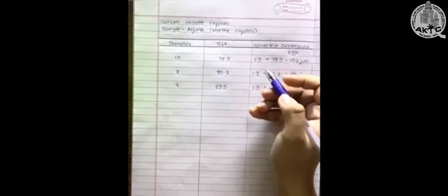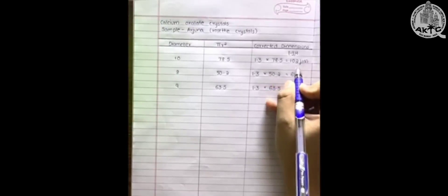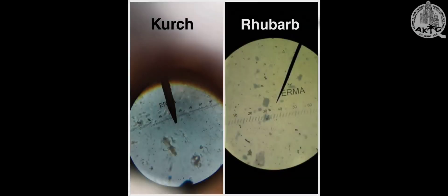Then we have to find the corrected dimensions by multiplying the area with the calibrated micrometer value. After calibrating ocular micrometer with stage micrometer, we got 1.3 microns. So multiplying 1.3 into 78.5 we get 102 micrometer. Like this we have to calculate for all the readings. Likewise we can observe and calculate for arjuna, rubab, and kurchi.